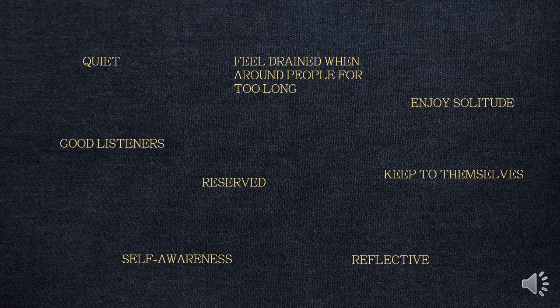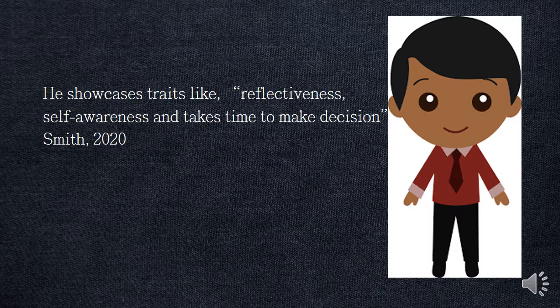Take Jeremy, for example. Jeremy is an eight-year-old boy. He tends to keep to himself and prefers to sit around and watch others play on the field. He likes to read and listen to stories. Jeremy is friends with most of the children in his class, but his teachers think he is a bit shy. We would consider Jeremy an introvert, as he showcases traits like reflectiveness, self-awareness, and takes time to make decisions.